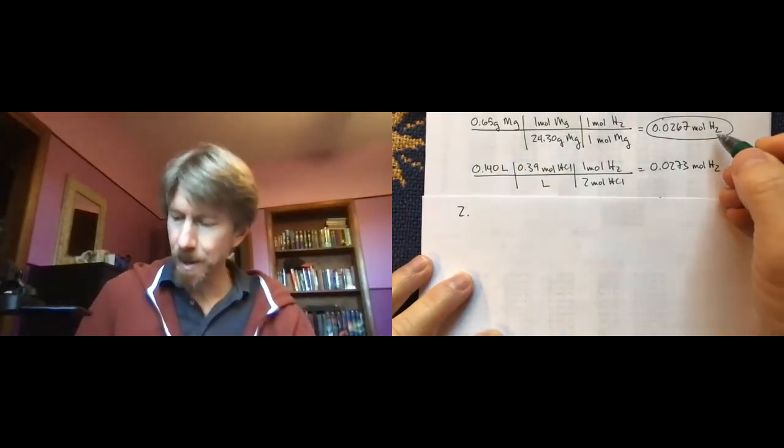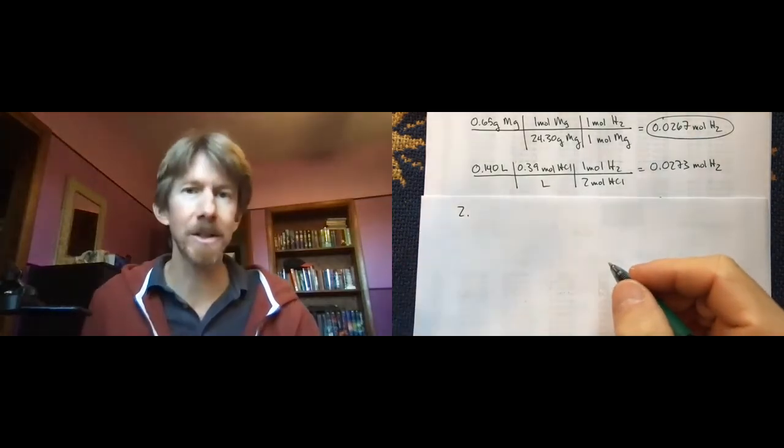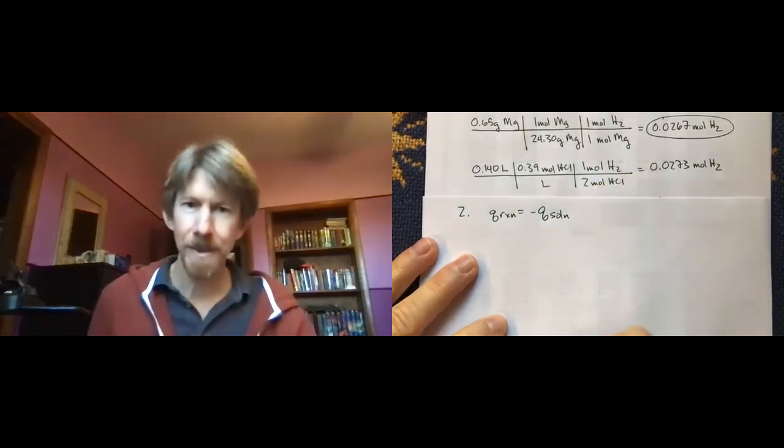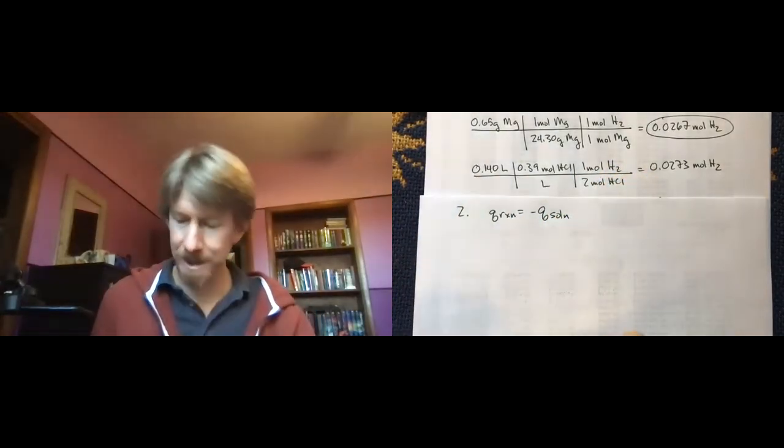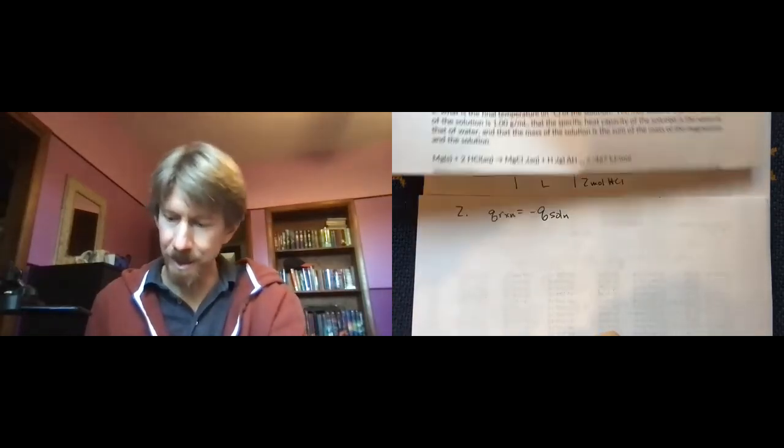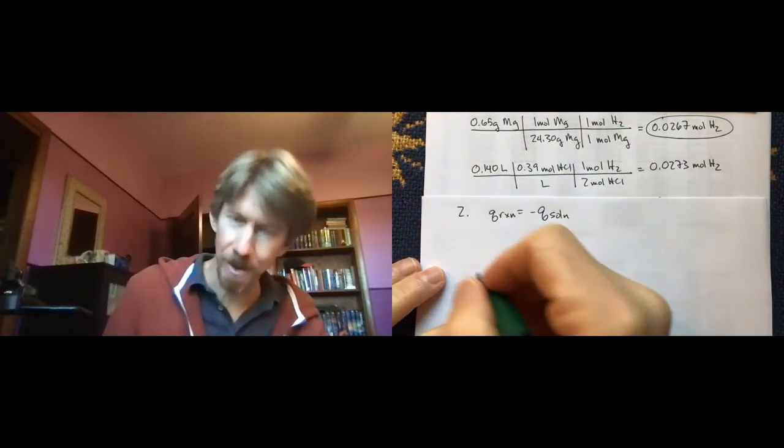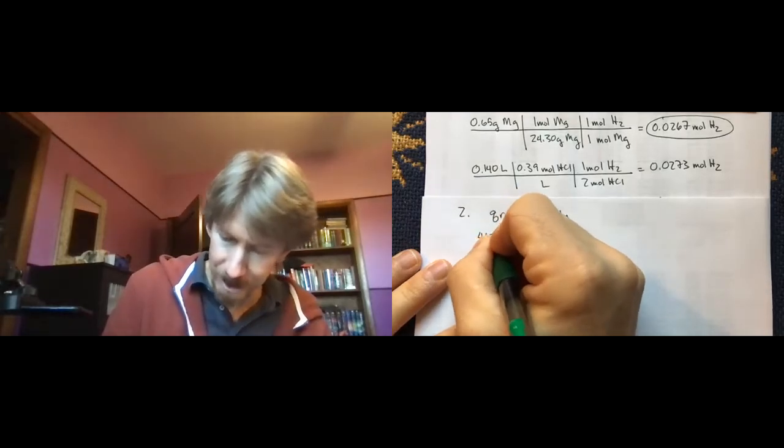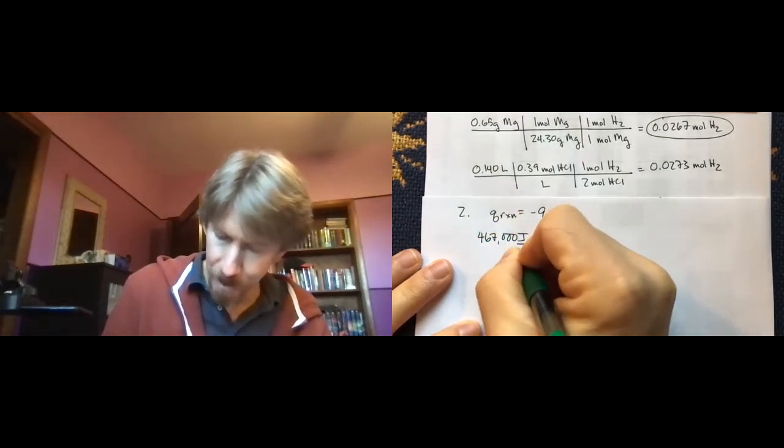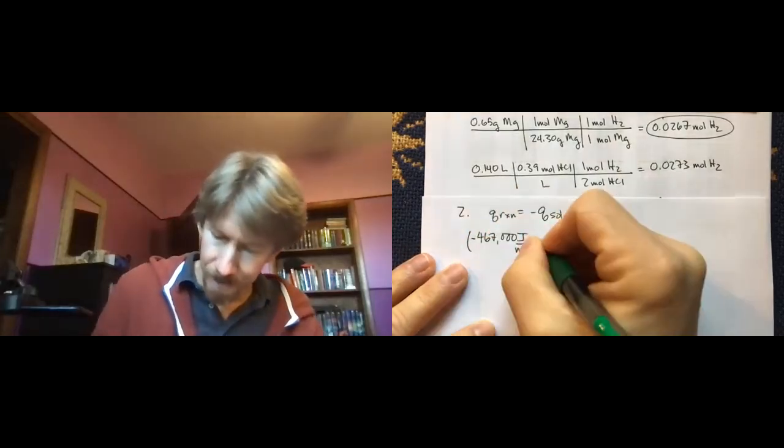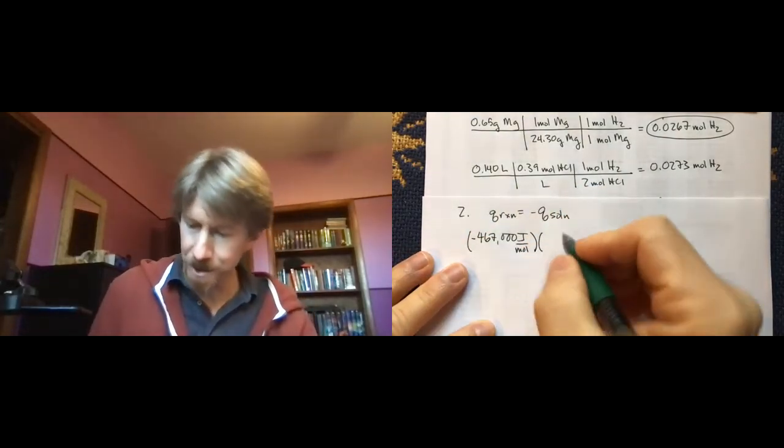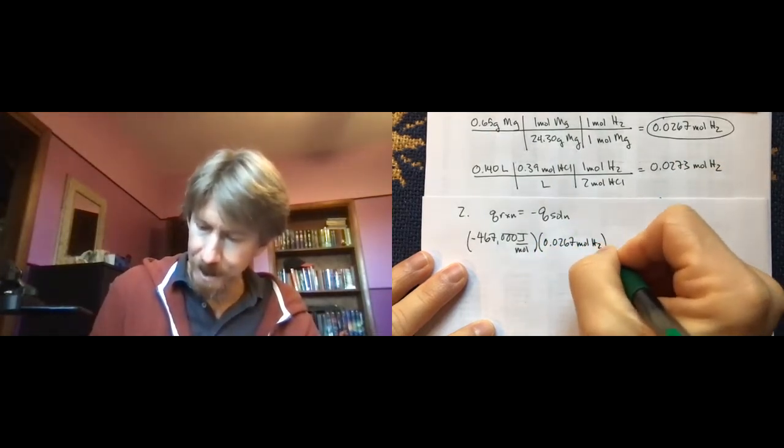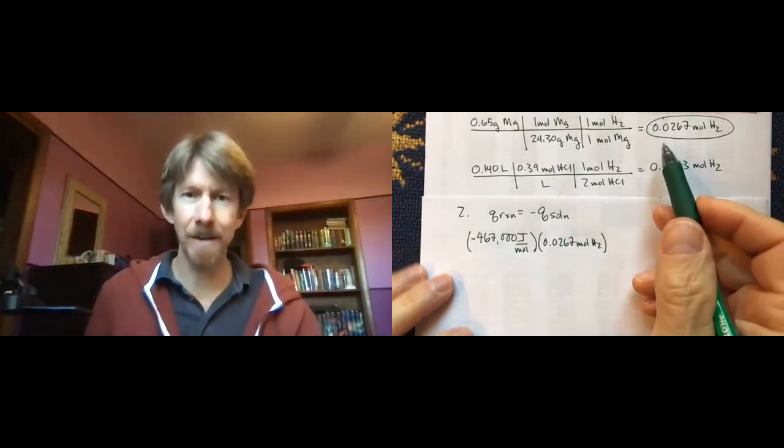We still need our moles of our limiting reactant. But the coffee cup calorimeter with a reaction. Q reaction equals minus Q solution. And we have to plug everything in, being careful of units. So our delta H value for minus 467 kilojoules per mole. As I may have mentioned before, I work all my problems in joules. So 467,000 joules per mole. And that's negative. It's going to be times my moles and my moles. We can use my moles of hydrogen here because it is also, it is the moles reacted. And it does have a one coefficient.